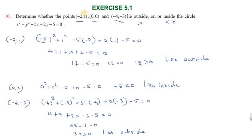To summarize: Point (-2,1) lies outside the circle, (0,0) lies inside the circle, and (-4,-3) lies outside the circle. Thank you, friends.